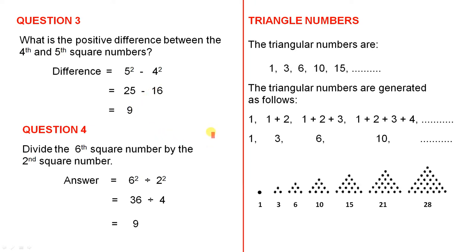Question 4. Divide the sixth square number by the second square number. The sixth square number is 6 squared. The second square number is 2 squared. 36 divided by 4 is 9.